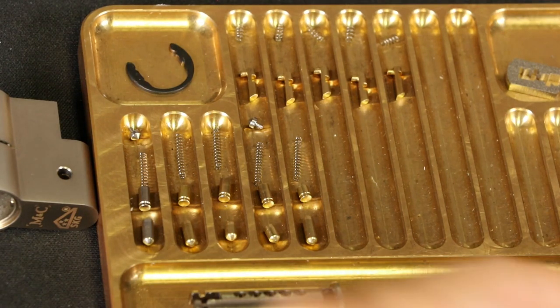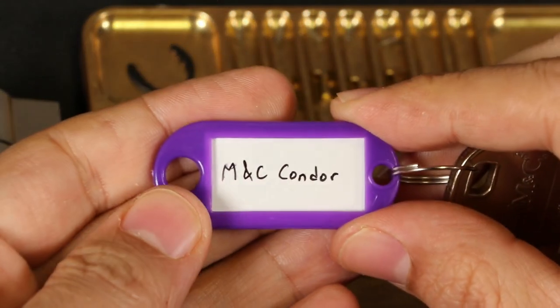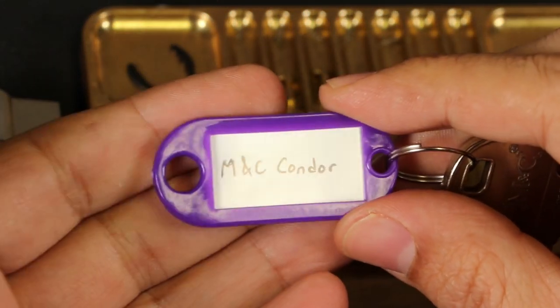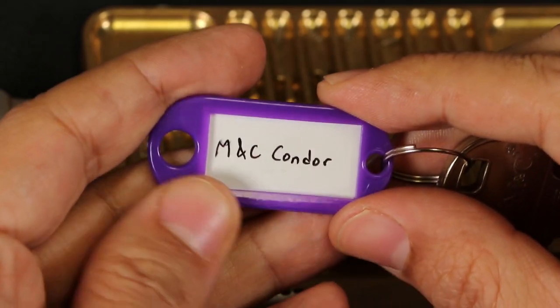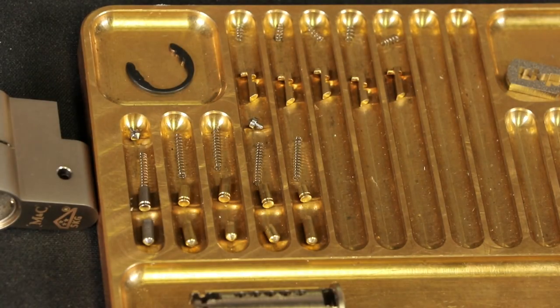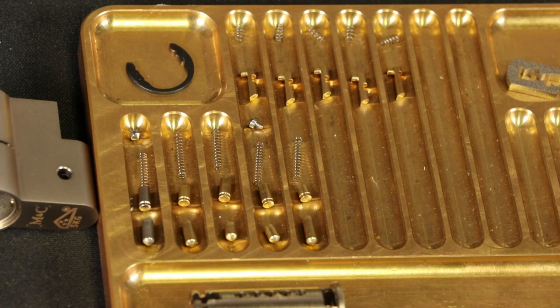That is the, oh, I didn't even say what lock this was, did I? It's the M&C Condor. So I did the M&C M2, the M&C Matrix, and now the M&C Condor. And then I still have the Color Plus to do. And then there's, they have a bunch of other locks, but I couldn't get ahold of them yet. So in any case, M&C Condor. Thanks everyone. Bye.